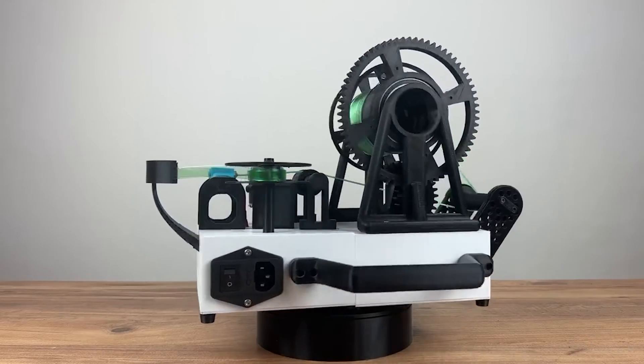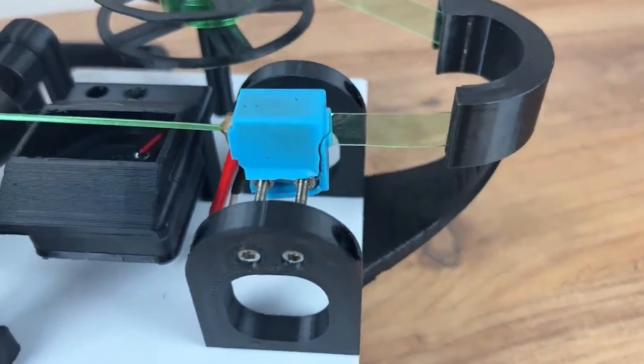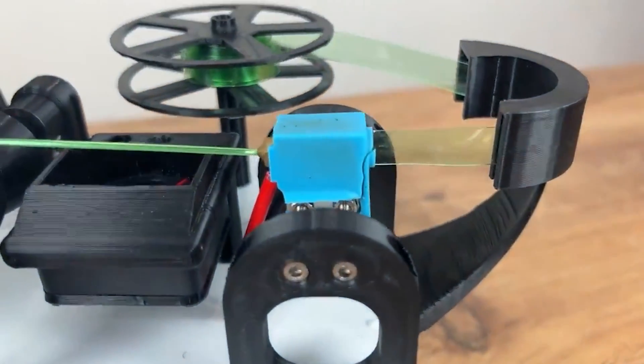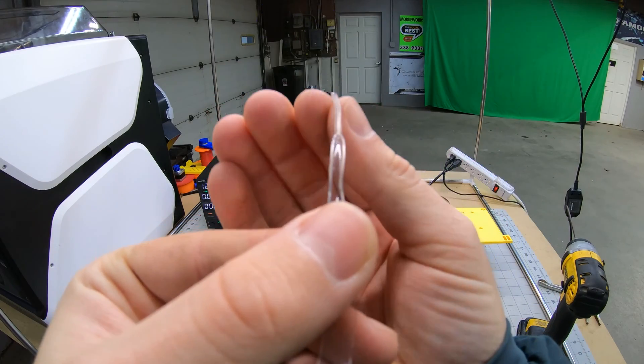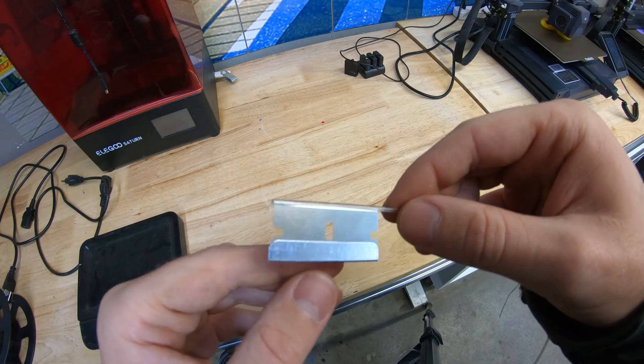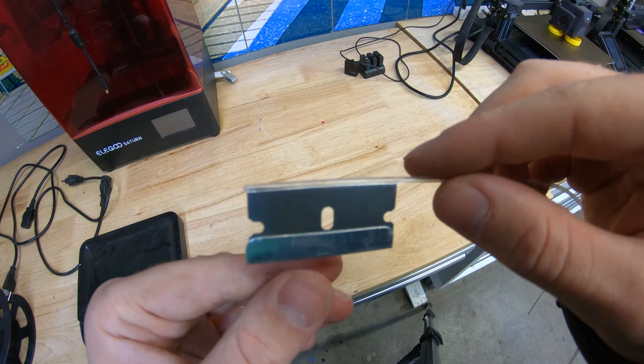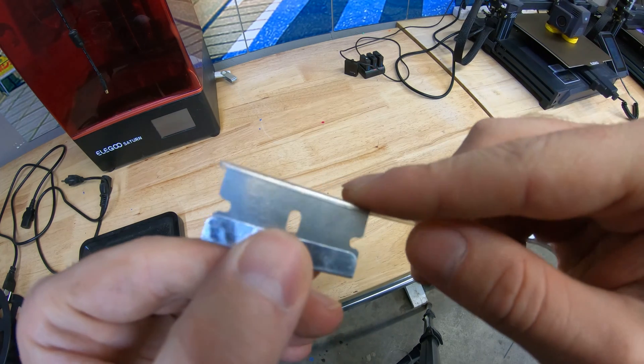First things first, you're going to need a polstruding machine. This machine takes the plastic and reshapes it into a 1.75 millimeter diameter cylinder. It's interesting to know that these machines don't actually fully melt the plastic. The inside of the filament is actually hollow. This is the main reason polstrusion is actually a lot different than extrusion.